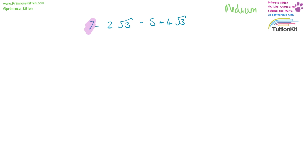7 minus 5, minus 2 square root 3 plus 4 square root 3. Minus 2 square root 3 plus 4 square root 3 gives us 2 square root 3. 7 minus 5 gives us plus 2. So the answer is 2 square root 3 plus 2.